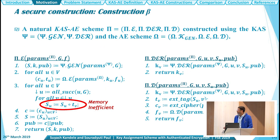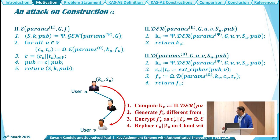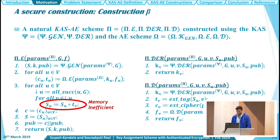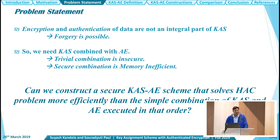Moving on to a secure construction, which is construction beta. Here we have made one change: we include the tag with the secret information of every user, and therefore the attack that was possible in construction alpha is not possible anymore in construction beta. But the problem is it is highly memory inefficient, because every user has to store a large number of tags. So we have seen that the trivial combination of CAS and AE is insecure, and the secure combination is memory inefficient. That's why our question is: can we construct a secure CAS-AE scheme that solves hierarchical access control more efficiently than a simple combination of CAS and AE?